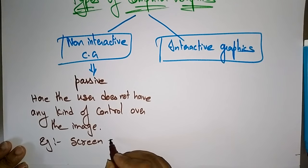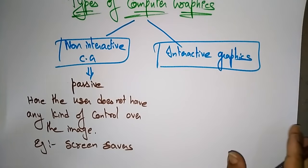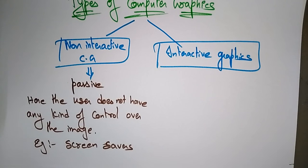The screen saver is a famous example. If you set a screen saver, multiple screen savers will be generated on your computer or mobile phone. It's non-interactive — you are just activating the screen saver, and it automatically slides and changes every few seconds and displays on your screen.